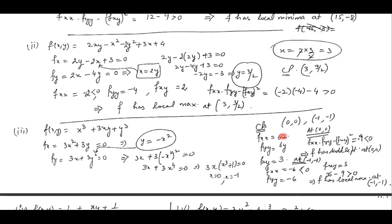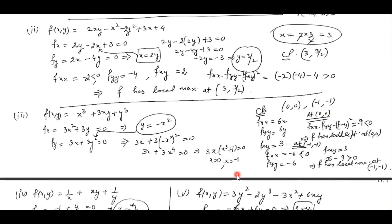So we are only having two critical points. Now we need to check maxima and minima at both points. We find all the second order partial derivatives: f of x, x; f of y, y; f of x, y. At (0, 0), f of x, x is 0, f of y, y is 0, but f of x, y is 3. So the discriminant is negative at (0, 0), which implies the function has a saddle point at (0, 0). And at (-1, -1), f of x, x is negative but the discriminant is positive, so the function has local maxima at (-1, -1).